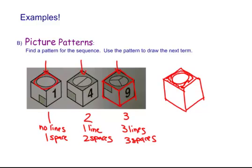I do see a pattern. One space, two space, three spaces. So what I need is four spaces. How could I make four spaces? I'm going to do this.